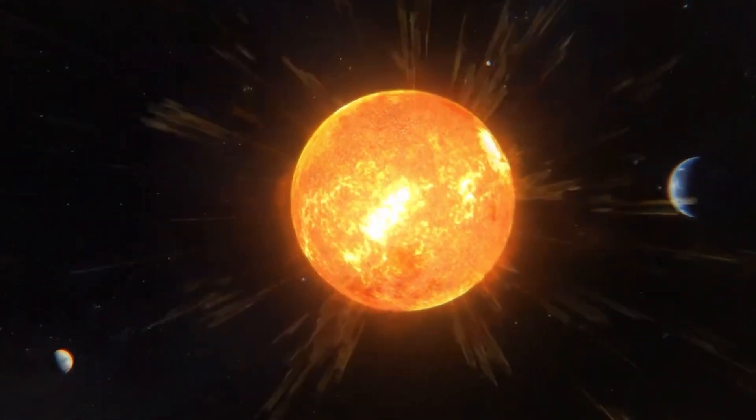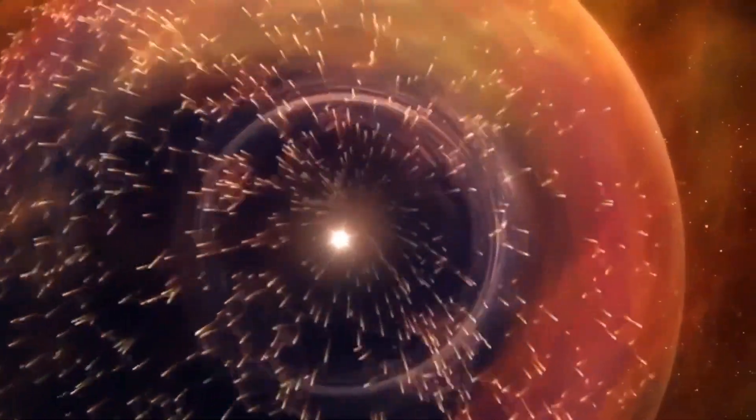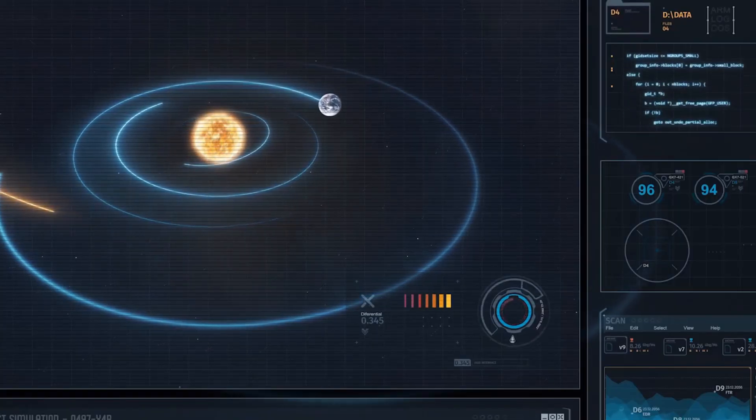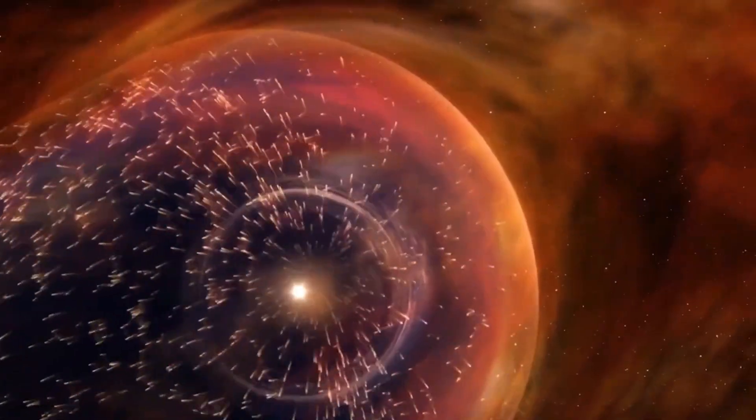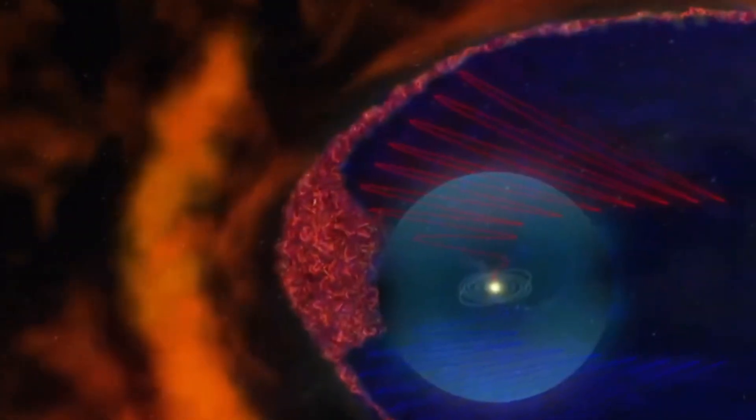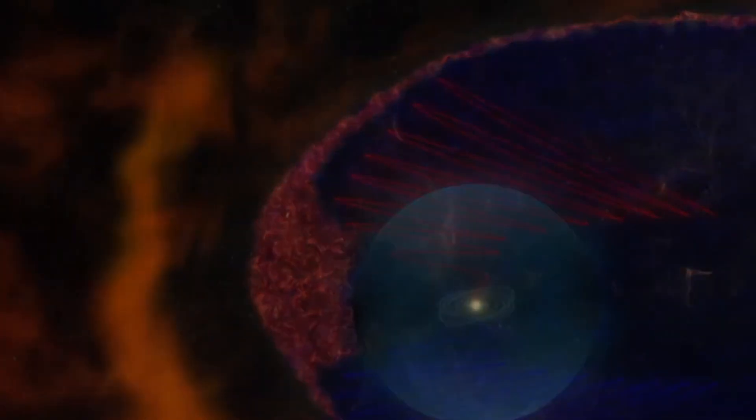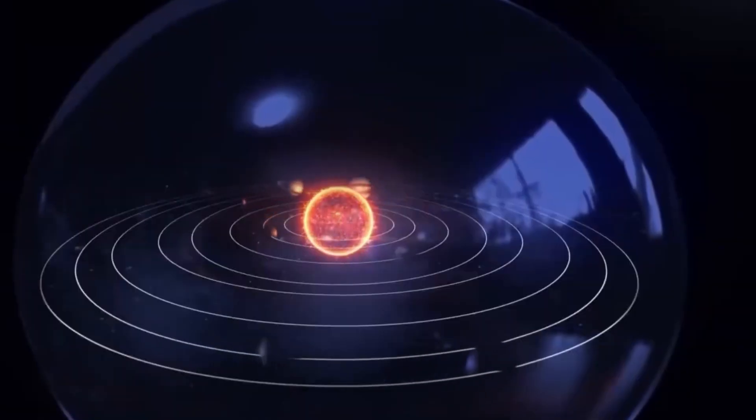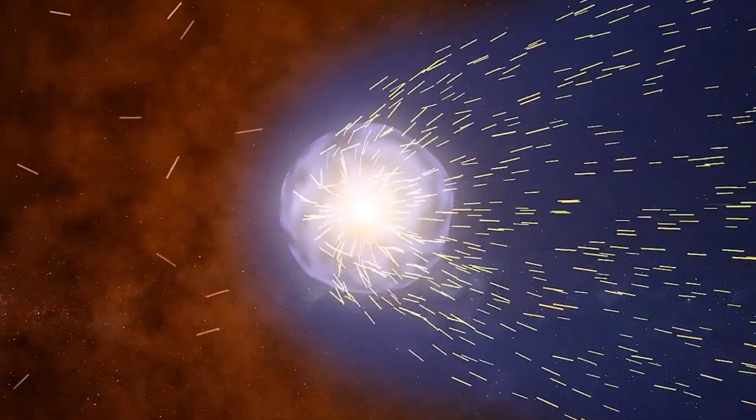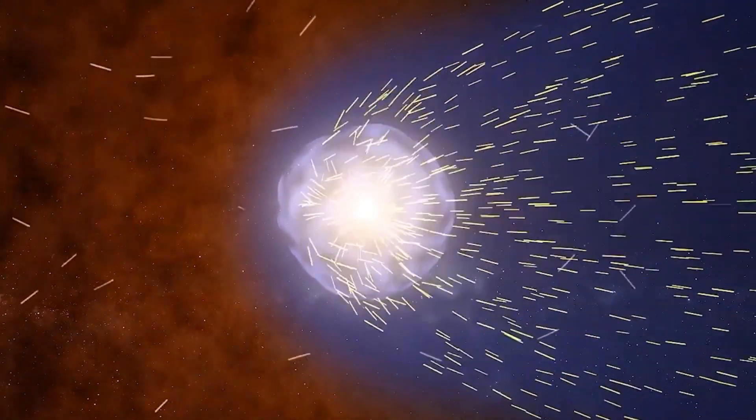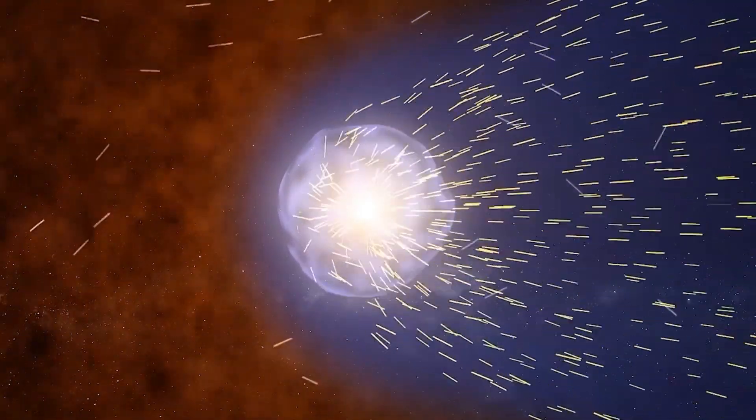They conducted the most complex computer simulations, creating a three-dimensional reconstruction of space and time. The study showed that the sun and earth are located almost in the center of a giant bubble with a diameter of 1,000 light-years, which they called the local bubble. According to calculations, it began to form about 14 million years ago.